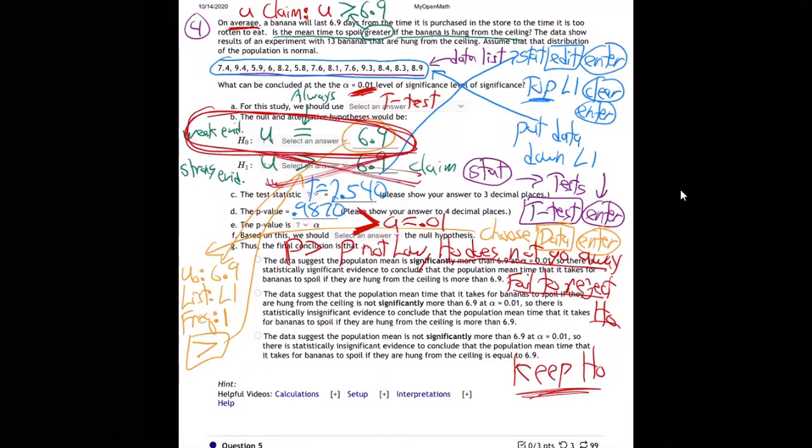All right. So that means there's weak evidence. We believe the μ is equal to 6.9. We said, yeah, the evidence is weak. Hanging the bananas from the ceiling doesn't really make them last longer. There was a little bit of evidence, but it was pretty weak. There was a 0.987. There's almost a hundred percent chance of luck. So that's a really big chance of luck. So it just seems that there's no evidence in favor of it. Hanging the bananas, there's no evidence. We believe the average is still equal. It's the same. It doesn't make it greater.